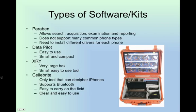There are many different types of software used in the field of cell phone forensics. Some of them are small and compact, such as Darkpilot, XRY, and Cellebrite, which make it easy to carry and use on the scene. After researching the different software, Cellebrite was the one that seemed to be able to decipher the most amount of phones, including the iPhone, which none of the other software had the ability to do.